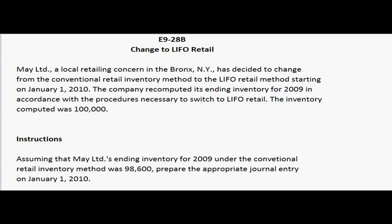So first let's see what the problem is asking. Maine Limited, a local retailing concern in the Bronx, New York, has decided to change from the conventional retail method to the LIFO retail method starting on January 1, 2010. The company recomputed its ending inventory for 2009 in accordance with the procedures necessary to switch to LIFO retail, and the inventory computed was 100,000. The instructions read: assuming that Maine Limited's ending inventory for 2009 under the conventional retail inventory method was 98,600, prepare the appropriate journal entry on January 1, 2010.